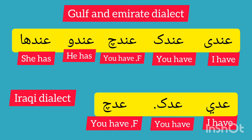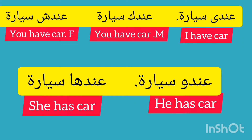Let me give you some examples to make it more clear. In the Gulf dialect we say: 'indi sayara' — I have a car; 'indak sayara' — you have a car; 'indich sayara' — you have a car (female); 'indo sayara' — he has a car. We can also use other examples: 'indi galam' — I have a pencil; 'indi kitab' — I have a book; 'indak kitab' — you have a book; 'indich kitab' — you have a book (female).